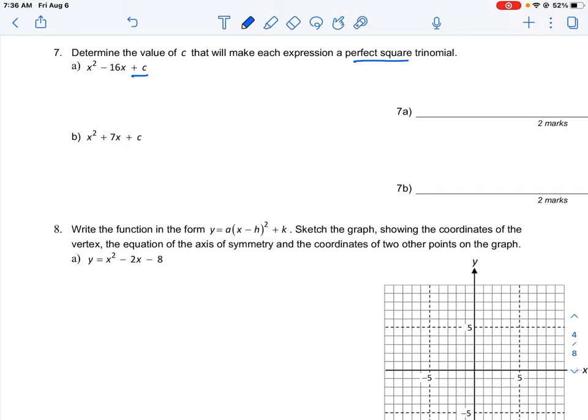So if we take two binomials, I'm just going to write down an example here: x plus 4, and we multiply it by itself, x plus 4 again.